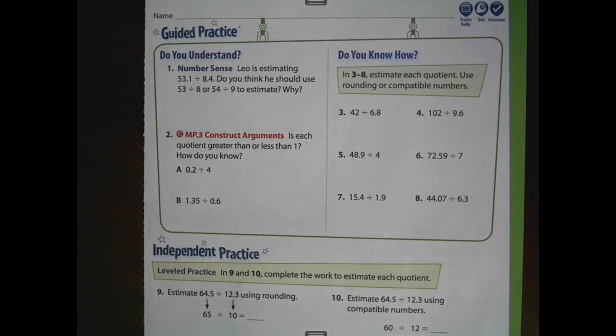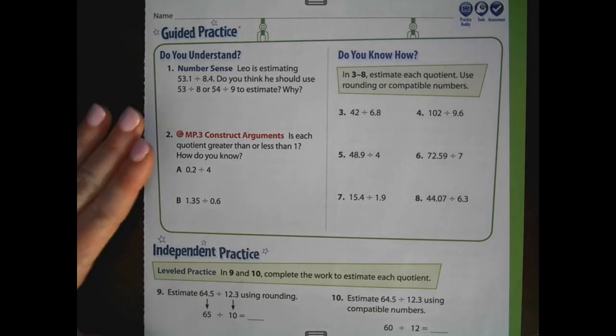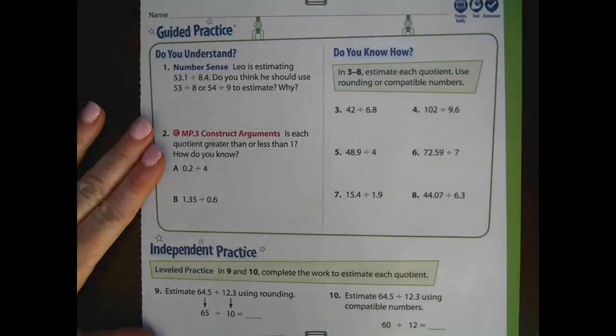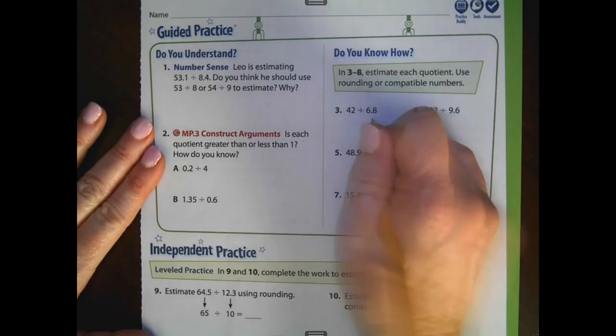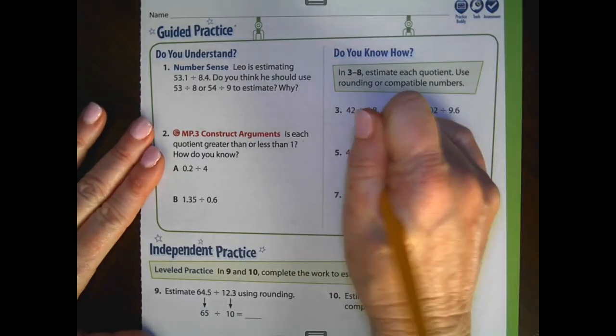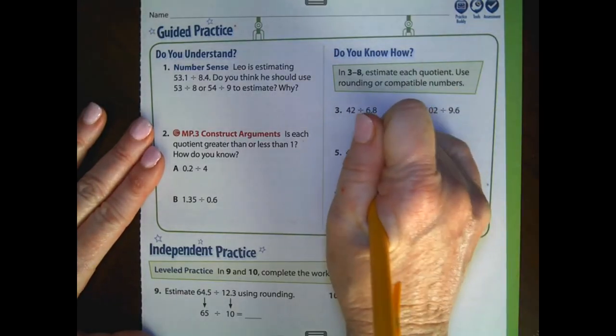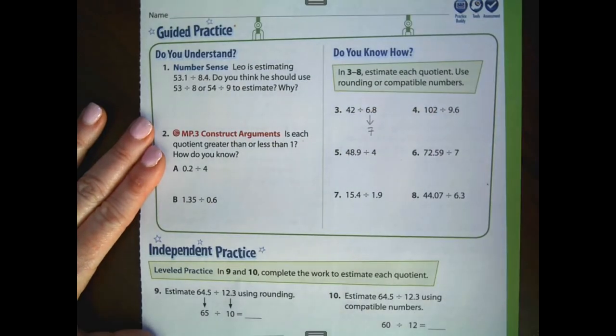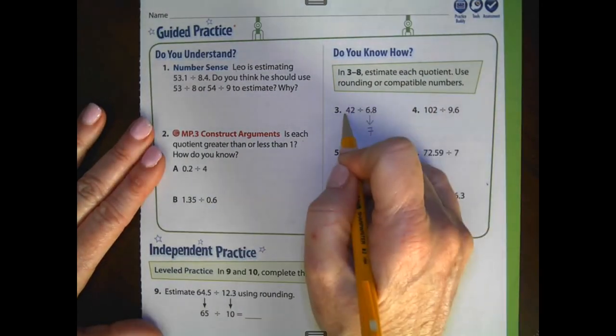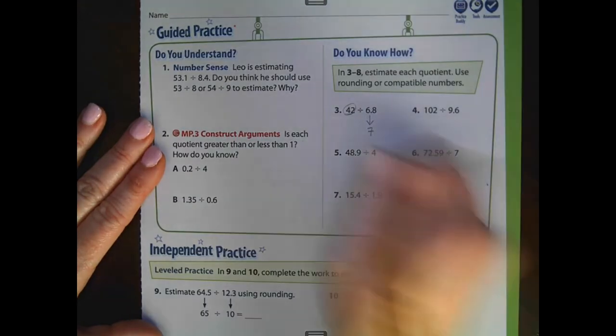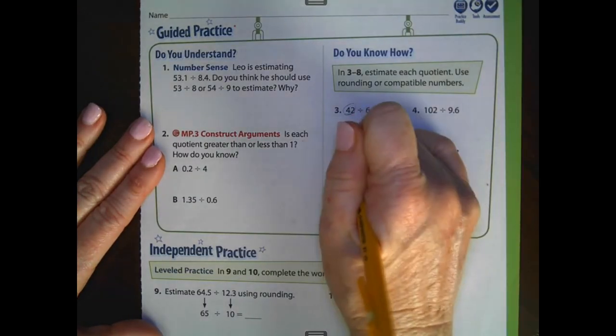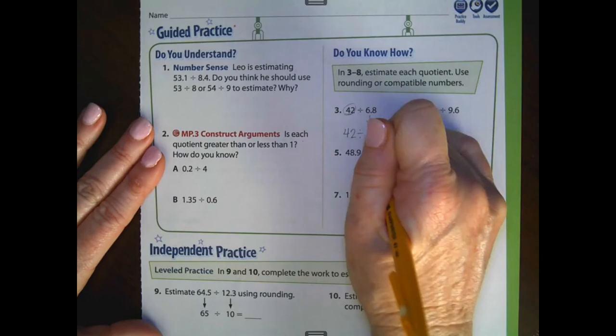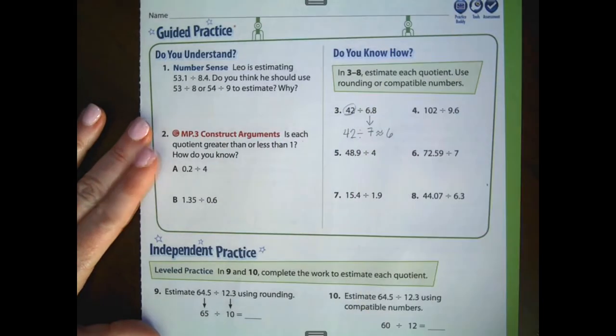Our guided practice problems on page 309. We are going to be estimating each quotient using rounding or compatible numbers for numbers 3 through 8. So starting with number 3, I'm going to look at the divisor first. 6 and 8 tenths is a decimal number. So I'm going to round it to the nearest whole number, which would be 7. A number 242 that is divisible by 7 is 42. So I get the estimated quotient of 6.